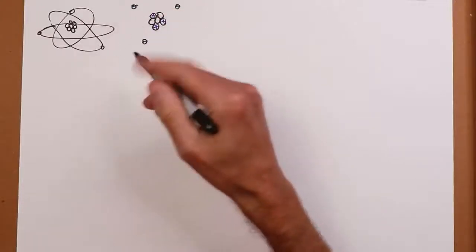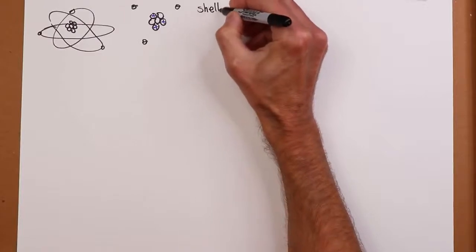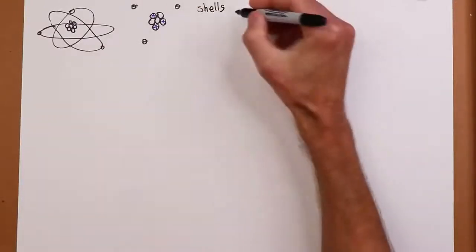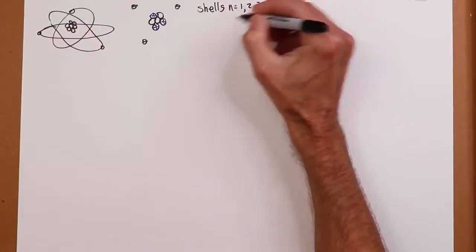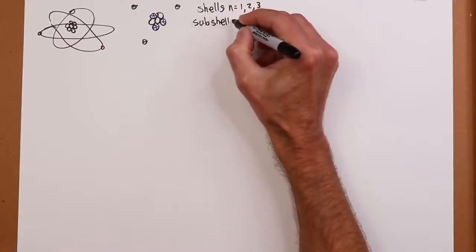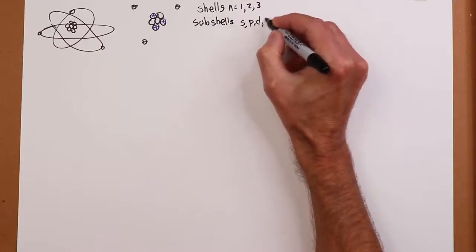We have a series of shells that the electrons are organized in. So we have subshell numbers, n is 1, 2, 3, and so forth. And then inside there, we have subshells. And we give those letter names: S, P, D, F, and so forth.